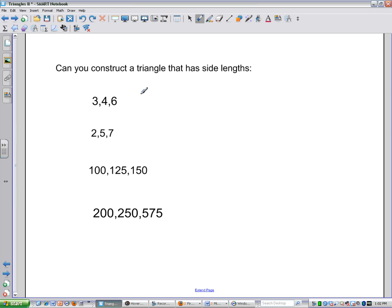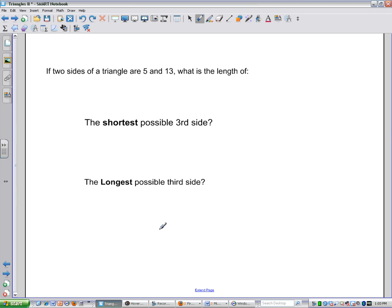So does this one work? Three and four bigger than six. Yes. Two and five, it's equal to seven. It's got to be bigger than, okay? That's a case where if I had the seven, the two and the five would meet right there, and it wouldn't actually make anything above the ground. 100 and 125 and 150 seems to work, right? 225 is bigger than 150, so that one's going to be a worker. This turns out to be 450 versus 575? No, that's not going to work at all.